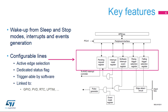These lines can wake up the processor from sleep and stop modes. Internal lines provide the possibility to wake up from sleep or stop modes on internal peripheral events, with status flags provided by related peripherals. They are linked mainly with peripherals working in sleep or stop modes.